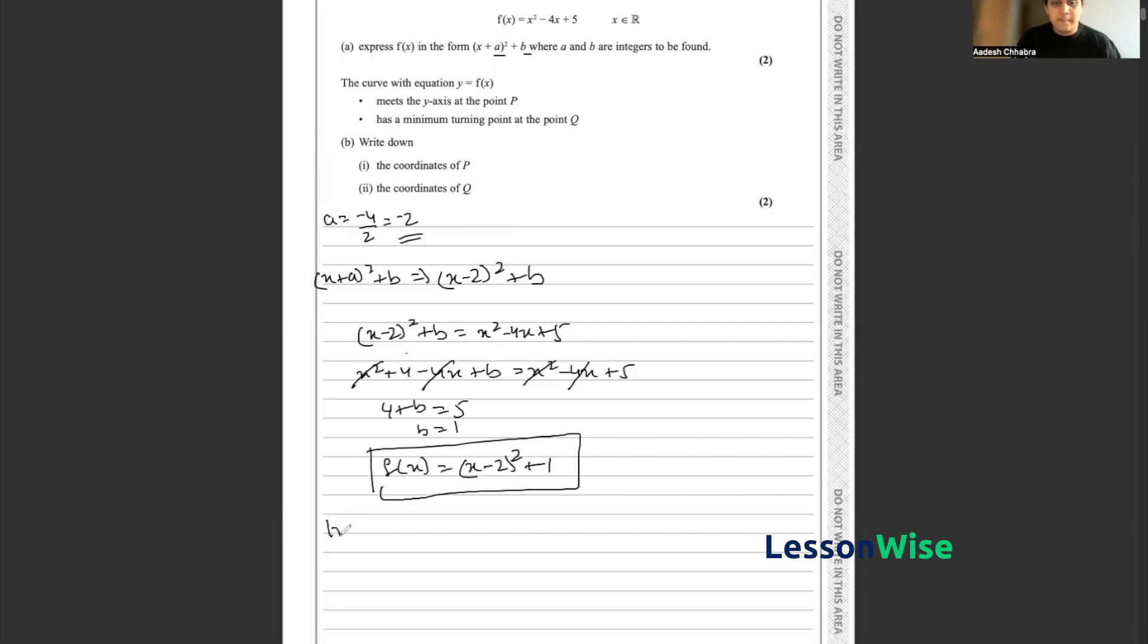So for part b, we have to use this form to help find out the coordinates of p and q. We've been told that p is a point where the curve meets the y-axis. So if it meets the y-axis at point p, we know that point p occurs at a point where x = 0.